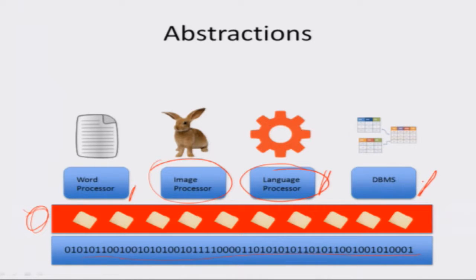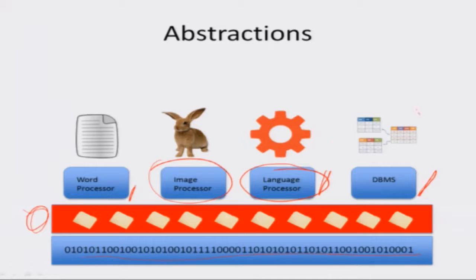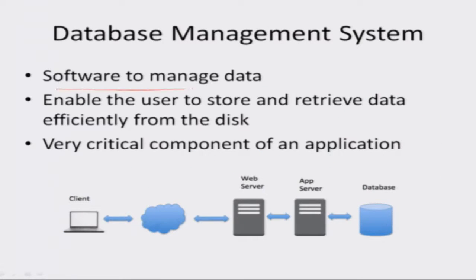And then there is this thing called a database management system, which can take a file and provide you an abstraction of a DBMS. The database management system is software which can interpret the strings of zeros and ones written on the disk as values which you and I can understand. Essentially it is software to manage data — it will allow you to store and retrieve data from the disk efficiently. It's a very essential part of any application, because if the data you input and process is not available when you come back tomorrow, the application is no good.